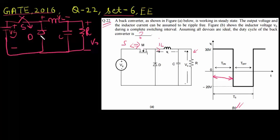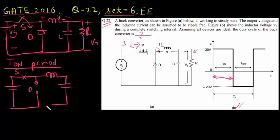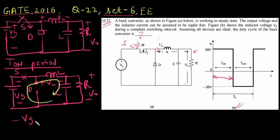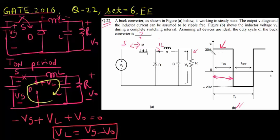So for T_ON period, your equivalent circuit will look something like this: your switch will be ON, diode is OFF, you have inductor, capacitor and a resistor. So if you apply KVL here, you can actually write -VG + VL + V0 = 0, so VL = VG - V0 when switch is ON. So this voltage is given as 30 volts, or you can write VG - V0 = 30 volts.